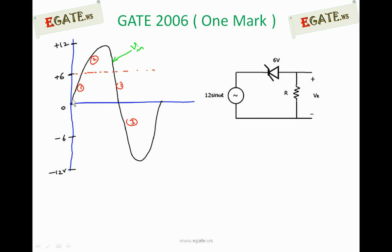Whenever you are applying positive voltages to the Zener diode as shown, the Zener diode comes into reverse bias. Under reverse bias, it has two options: it may remain in reverse bias, or it may go into the Zener breakdown region, depending on the voltage applied. So here, 0 to 6 volts is one case and above 6 volts is the second case. This entire input waveform is divided into three cases: Case 1, Case 2, and Case 3.